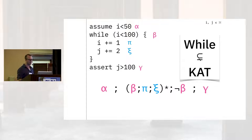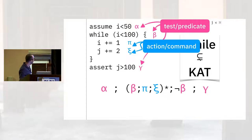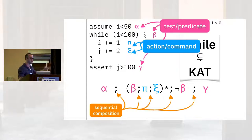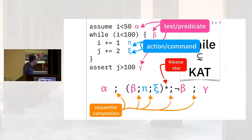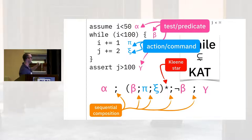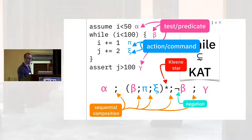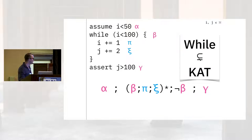This is the sort of program one might want to verify. We can get this into KAT using the same tools. We have our test/predicate and action/command. We do sequential composition to describe the program — there's no branching control flow via if, so no plus operators here. We do have a Kleene star, which is zero or more runs of the loop. Alpha has to hold, i has to be less than 50, then while i is less than 100 we increment i and double increment j, until not-beta holds. Then we check our assert gamma. We've got the Kleene star and the same negation.